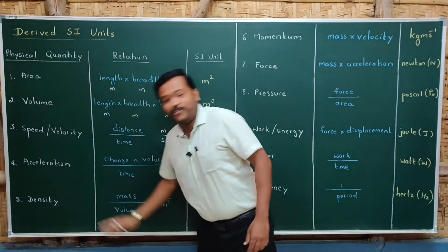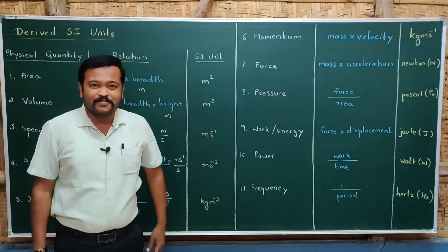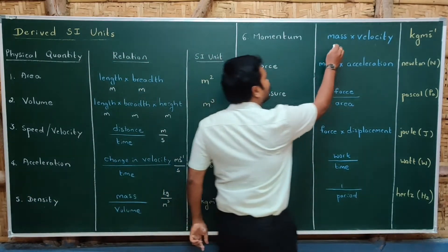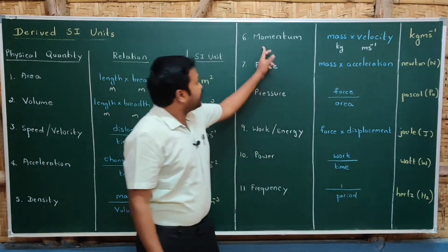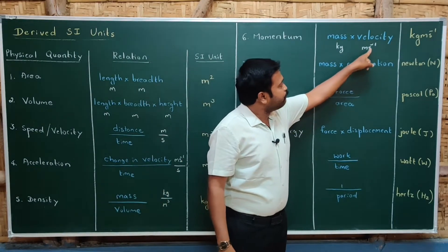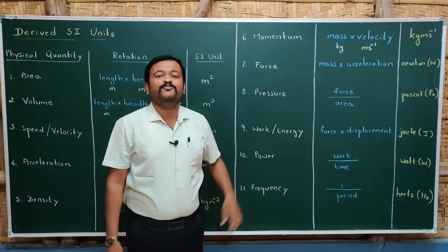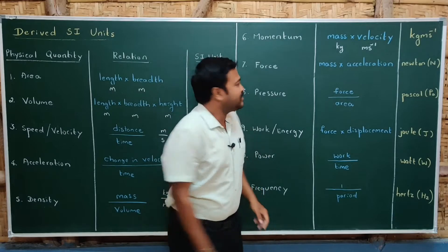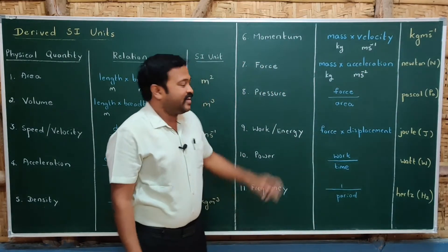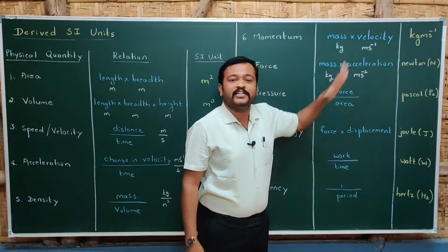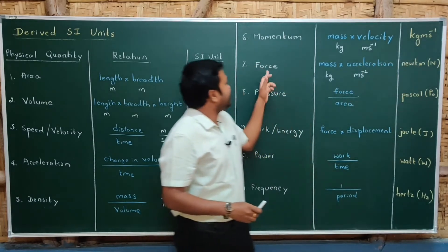These are some of the derived physical quantities and their SI units. Next is momentum. The formula for momentum is mass × velocity. The SI unit of mass is kg and the SI unit of velocity is meter per second, so the SI unit of momentum is kg·m/s. For force, the formula is mass × acceleration. The SI unit of mass is kg and the SI unit of acceleration is m/s², so the SI unit of force can be written as kg·m/s², but instead we use the name of the scientist — newton.